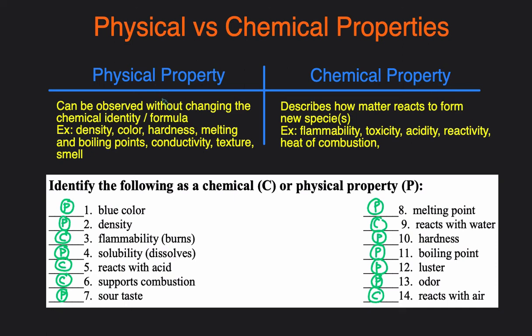Physical property is something you can observe without changing the identity. And chemical property just describes how this compound or element reacts to form new compounds or elements, pretty much describes the reactivity.